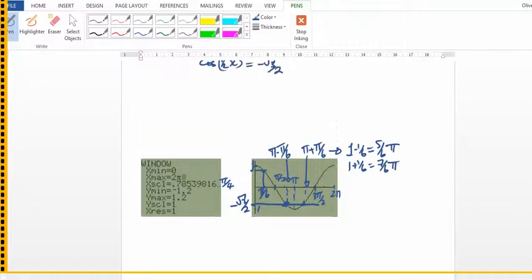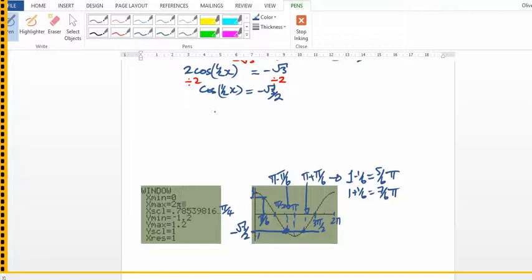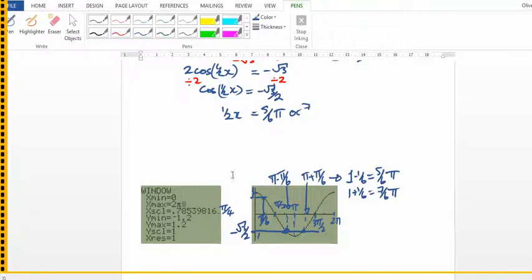So we go back up. If we did the inverse cosine, so opposite of cosine is cos to the minus 1, we'd get 5π over 6 or 5/6 π or 7/6 π. It should be 7/6 π.